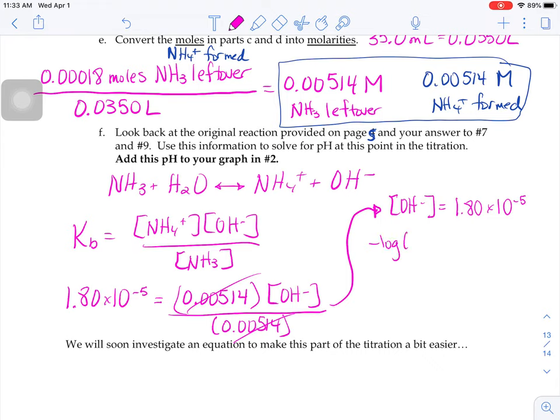If we do the negative log of 1.8 times 10 to the negative 5th, that'll give us our pOH. The pOH turns out to be 4.745. So if we want to get the pH, we have to subtract that number from 14 and we get a pH of 9.255.